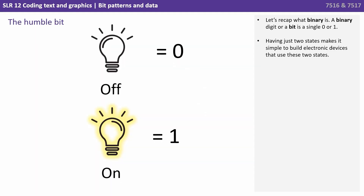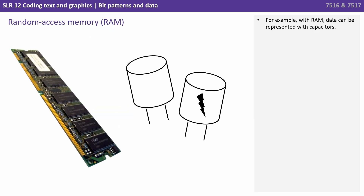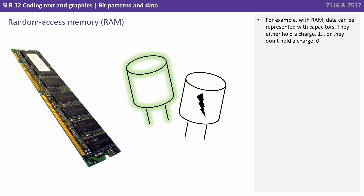Let's very quickly recap what binary is. A binary digit is a bit, and it's a single zero or one. Having just two states makes it simple to build electronic devices that use these two states. For example, with RAM, data can be represented with capacitors — they either hold a charge, let's say 1, or they don't hold a charge, let's say 0.